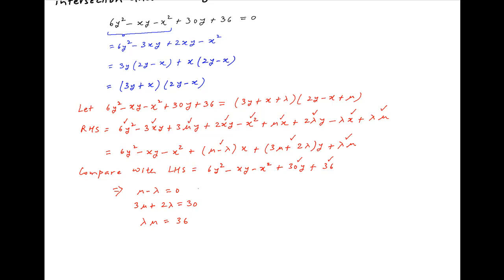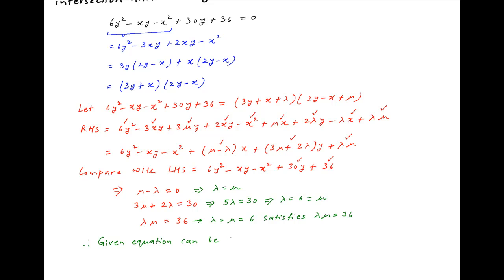The first equation implies that μ = λ. Using this in the second equation, we get 5λ = 30, and therefore λ = 6, which is also equal to μ. Notice that this solution for λ and μ satisfies the third equation. Therefore, the given equation can be expressed as (3y + x + 6)(2y - x + 6) = 0.